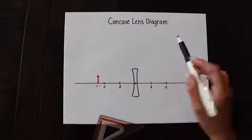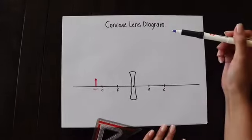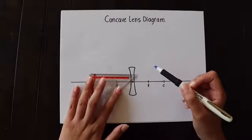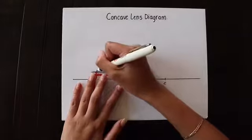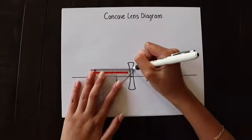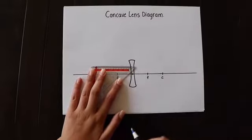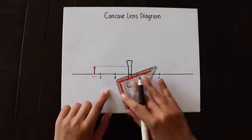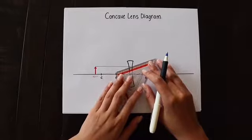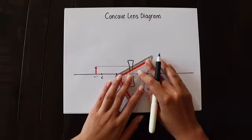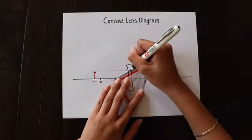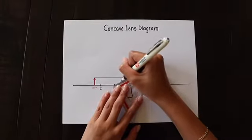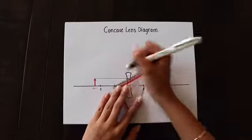Now we're going to move on to lens diagrams, starting with the concave lens diagram. You want to start your first ray parallel, like we've been doing. Go toward the center of the lens where the vertex is. From here, the ray is going to refract off the lens from the focal point. It's going to be real on this side, and then you're going to dot it on this side to signify that it's virtual over here.